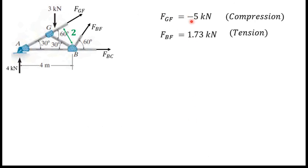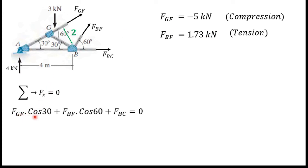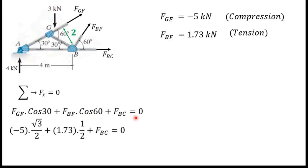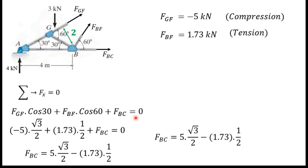Now I know FGF and FBF values. Next I am going to consider sum of all horizontal forces. I can write: FGF × cos 30 — the horizontal component of FGF — plus FBF × cos 60 — the horizontal component of FBF — plus FBC, which is this member force. All components are directed in the same direction. Substituting the known values of FGF and FBF into this equation, I can finally get FBC equals 3.46 kN. Since it is a positive value, FBC is a tension force.